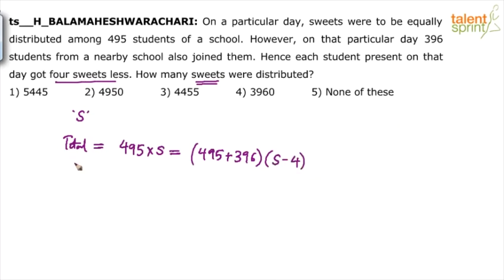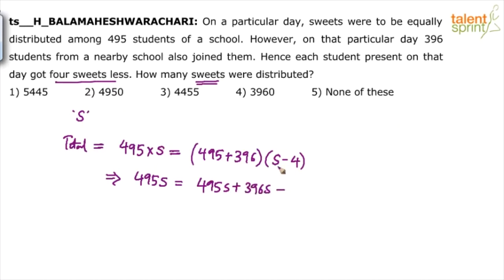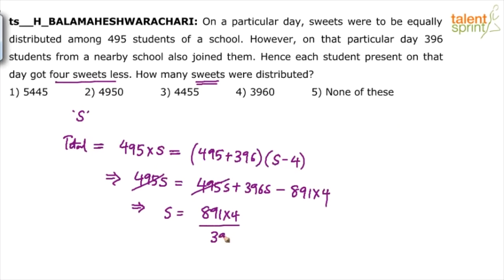Simplify and find out the answer. He's asking us to find total suites only. So 495S equals 495 plus 396 — or you can say 495S plus 396S minus 891 into 4. The 495S terms cancel, so S will be equal to 891 into 4 divided by 396.